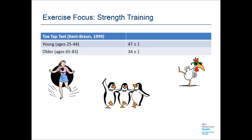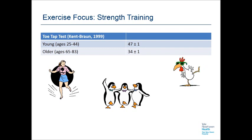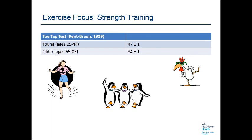The toe tap test determines the movement speed of the ankle. The individual sits with knees and hips bent to 90 degrees each. While keeping the heel on the floor, the individual taps the floor with the ball of the foot as quickly as possible. The number of repetitions counted during a 10-second interval are interpreted accordingly — young adults age 25 to 44 should achieve 47 plus or minus 1.